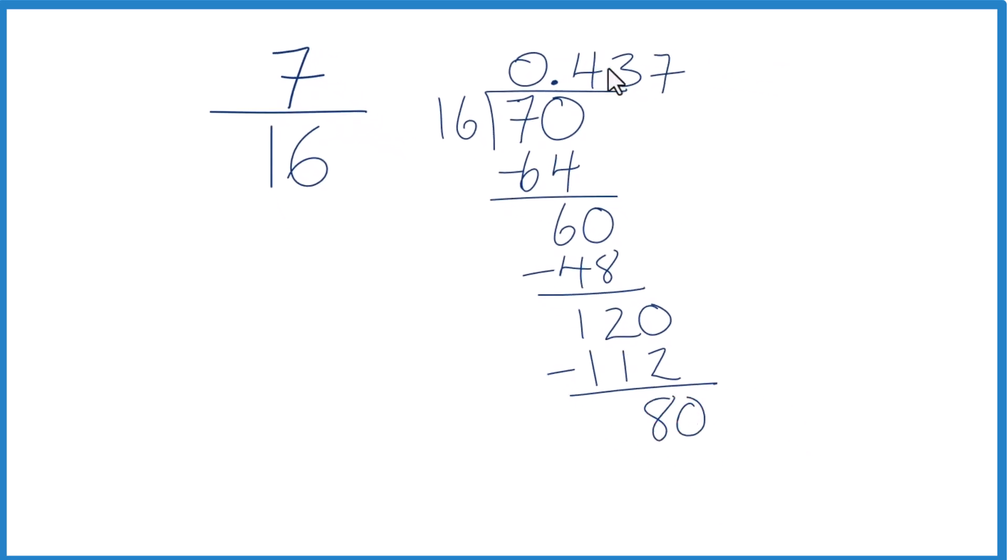We're going to call it 80 and move over 1. And 5 times 16 is 80. Subtract, we get 0. So when we convert the fraction 7 sixteenths to a decimal, we get 0.4375. It's quite a bit of work to do this, but this is the process. You can convert your fraction 7 sixteenths to the decimal 0.4375.